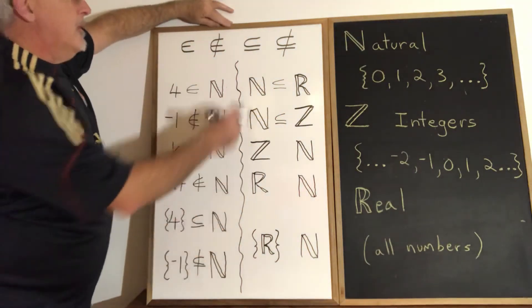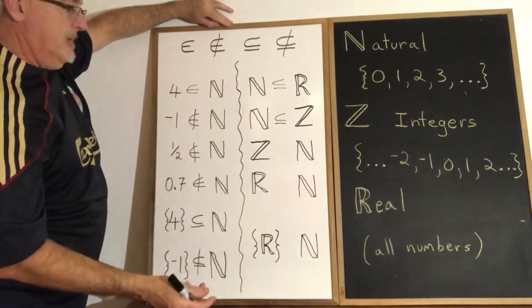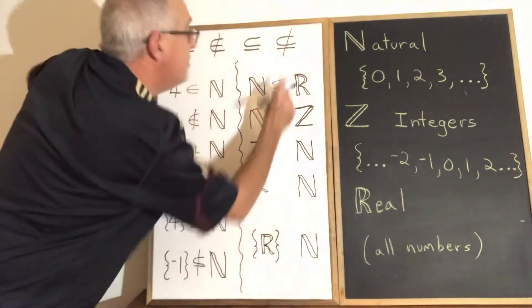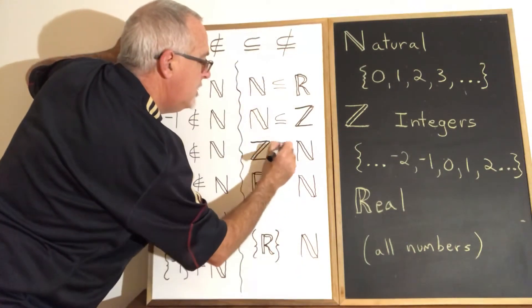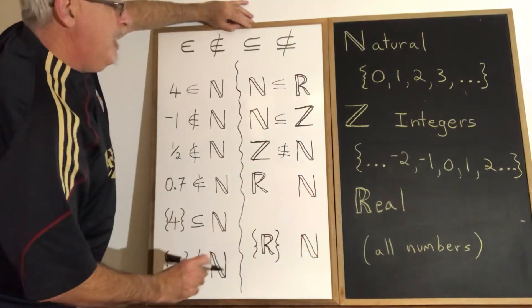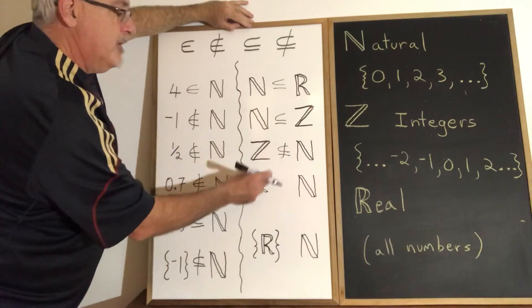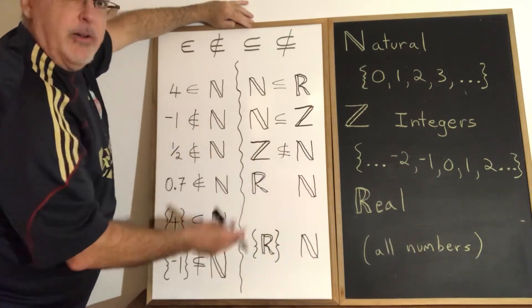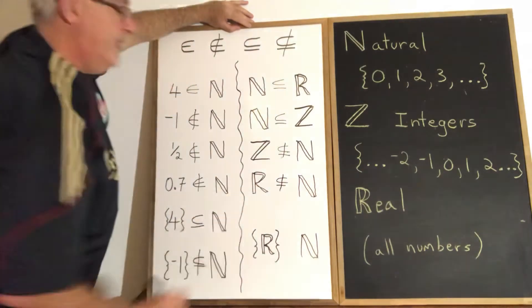I'm seeing situations where I want to use the subset symbols because what I see on the left is a set. Is integers a subset of natural numbers? No — so I'm using 'is not a subset of.' Is real numbers a subset of natural numbers? No. Both integers and real numbers are much bigger sets than natural numbers; they include lots of elements that are not in natural numbers. So neither is a subset of natural numbers.